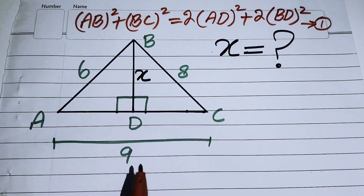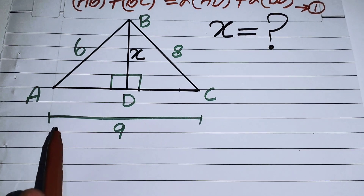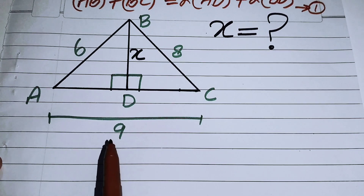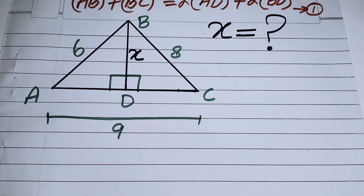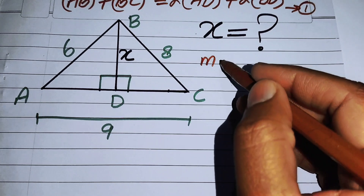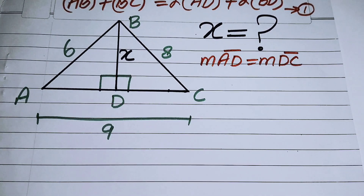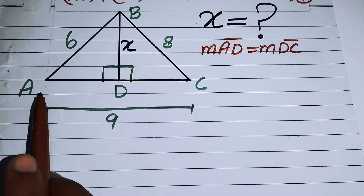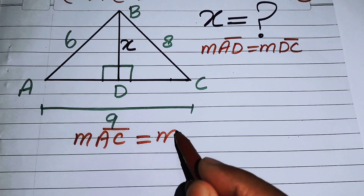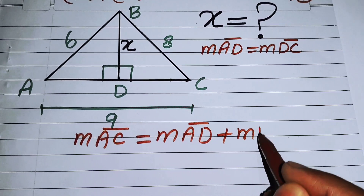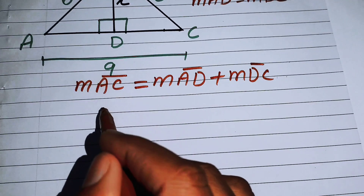Since D is the midpoint of AC, and the length of the whole side AC is 9 centimeters, D divides AC into two equal parts. So the measure of AD equals the measure of DC. The total length AC equals AD plus DC.